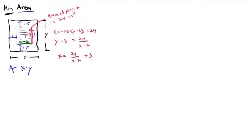So now I have y in terms of x, so I can substitute back in. Instead of writing just a, I'm going to write A(x). My area function is now in terms of one variable x. It would be x times [24/(x-2) + 3]. Distribute that x, I get 24x/(x-2) plus 3x. So now I have a function that I want to minimize.